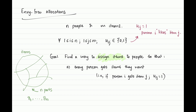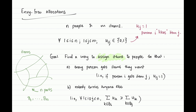The second constraint brings in the envy-freeness in the problem's name. We want to make sure nobody envies anybody else. Consider any person i: person i evaluates the bundles everybody else received according to his own utilities, not the utilities of the other person. When person i looks at person j's bundle, he evaluates it from his perspective and gets a certain utility. Not envying person j means the utility from your own bundle is at least the utility you see in person j's bundle — and this should hold for any other j.